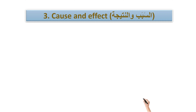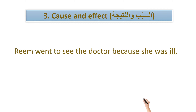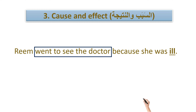The third strategy is cause and effect — sabab wa nateeja. For example: 'Reem went to see the doctor because she was ill.' Going to the doctor is the result — the nateeja — so something had to happen before it. Her being ill is the cause — the sabab.